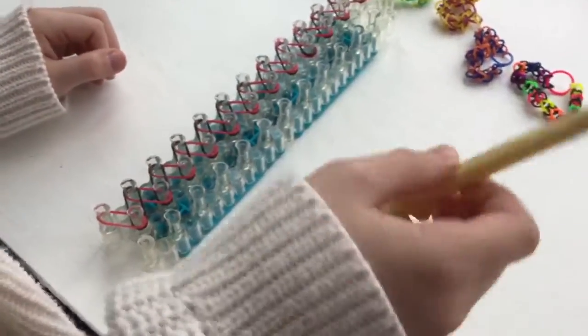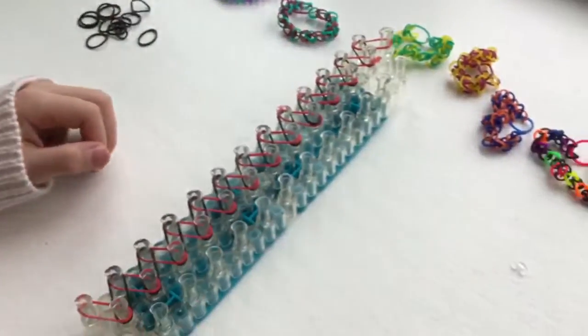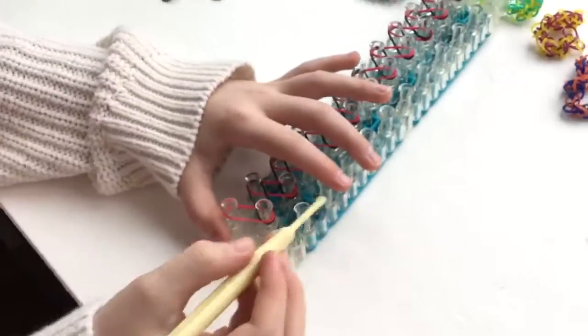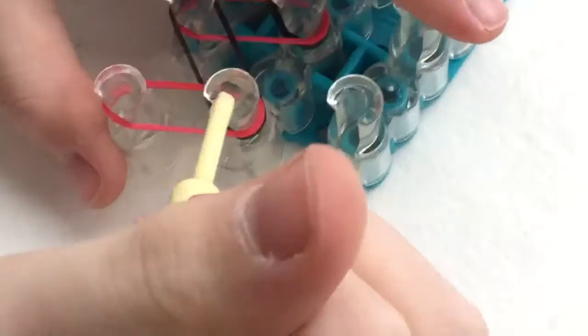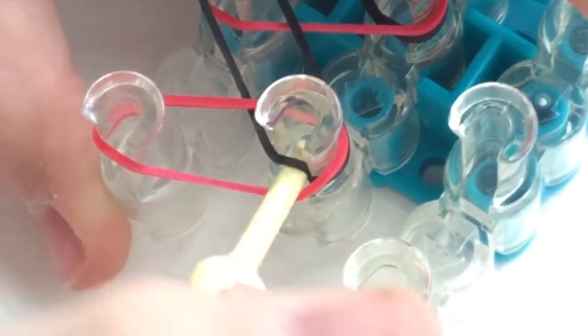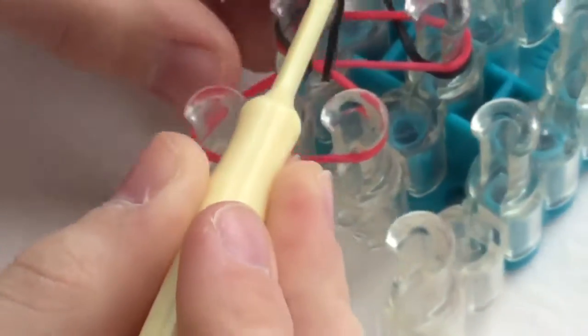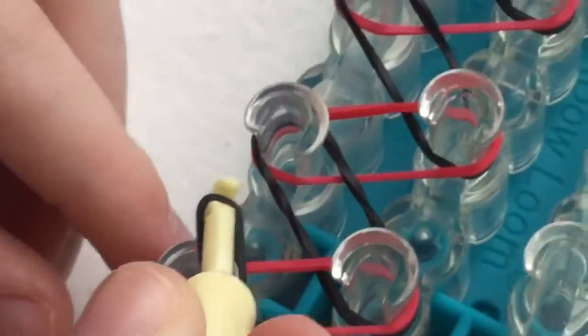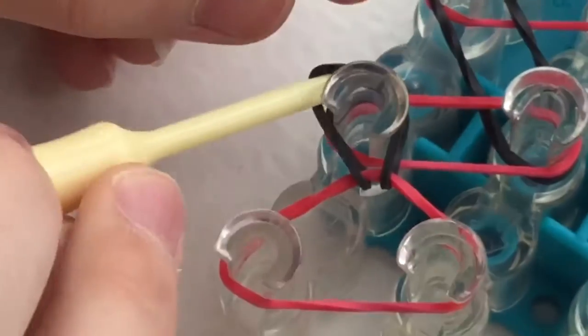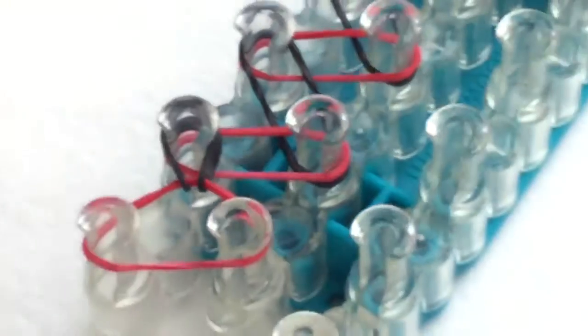Then you're going to take your hook, and this is when you get to start to use the hook. What you're going to do is you're going to put it down facing this way and grab it like that and pull it over onto this one.